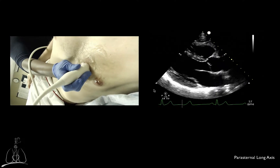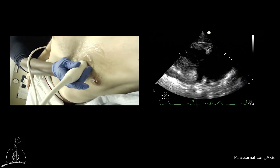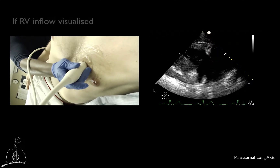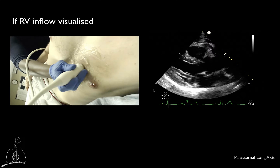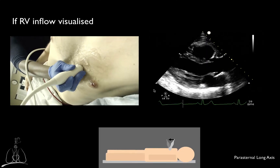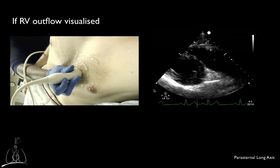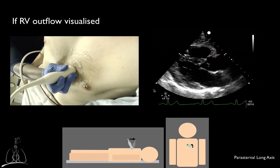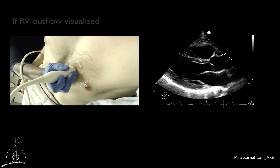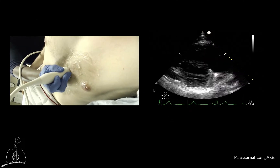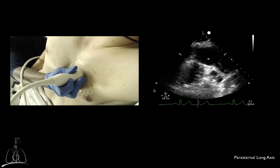Sometimes you will obtain images that identify structures that should not be insonated in a true parasternal long axis view. For example, from the parasternal long axis view, you may see the right ventricular outflow and inflow views. If, while trying to obtain the parasternal long axis view, you start seeing the right ventricular inflow tract, you should tilt the footprint of the transducer downwards and/or rotate the transducer counterclockwise by a few degrees. It is more likely to insonate the right ventricular inflow tract if you position the transducer on a lower intercostal space, while you are more likely to see the right ventricular outflow tract if you slide the transducer higher on the chest.